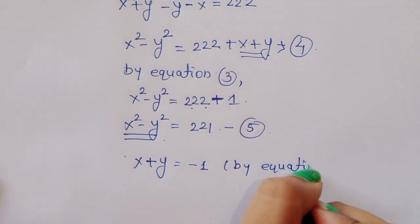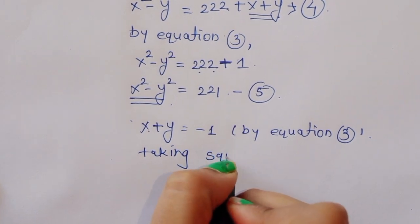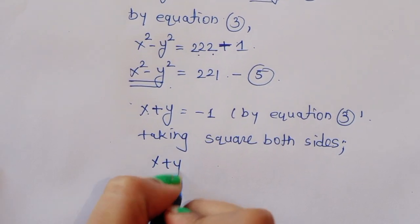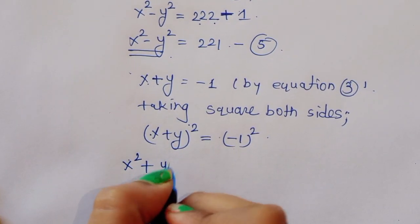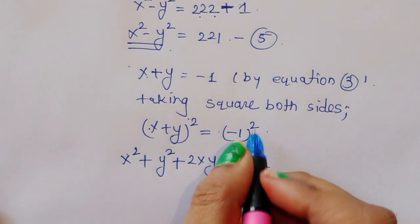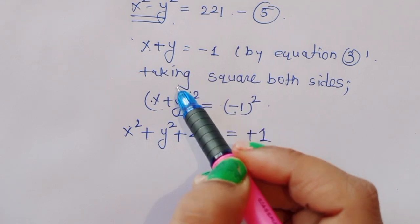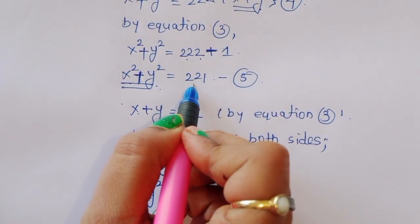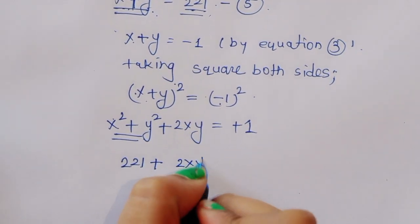Now we take equation 3: x plus y equals minus 1, and square both sides. Squaring gives (x plus y) squared equals (minus 1) squared, which expands to x squared plus y squared plus 2xy equals 1. We now substitute the value x squared plus y squared equals 221, giving 221 plus 2xy equals 1.